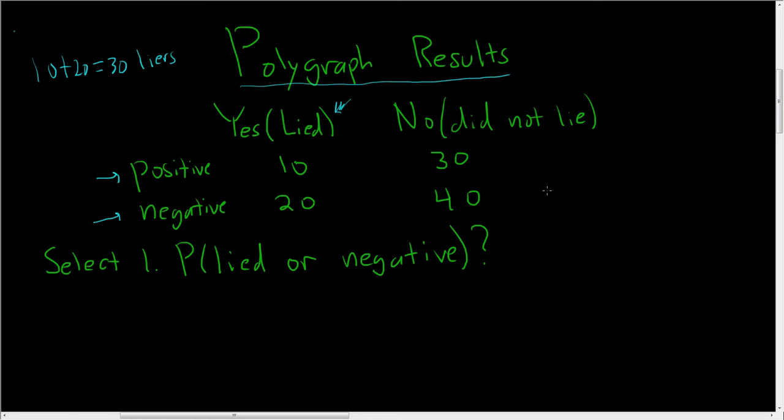So how many people did not lie? Well, did not lie. You just go to 30 and 40 and add them up. So you get 70 people that did not lie.